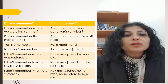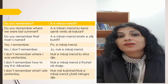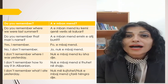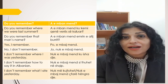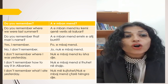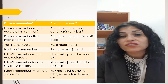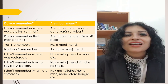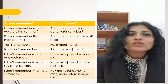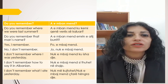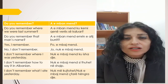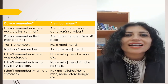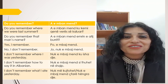Or, 'I don't remember where I was yesterday' — 'nuk e ban ment ku isha dje?' Or, 'I don't remember what I ate yesterday' — this happens all the time! You can say 'nuk më kujtohet çfarë hëngra dje?' or you can use the other form: 'nuk e ban ment çfarë hëngra dje?'